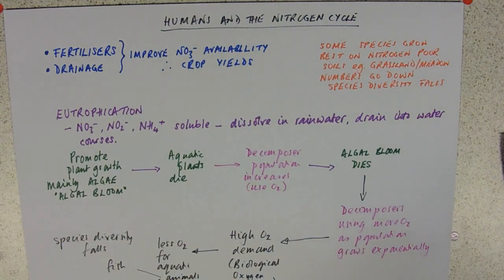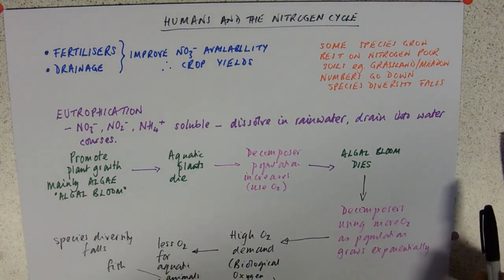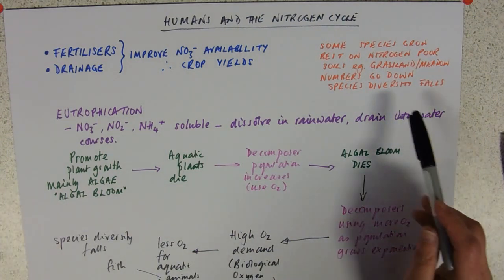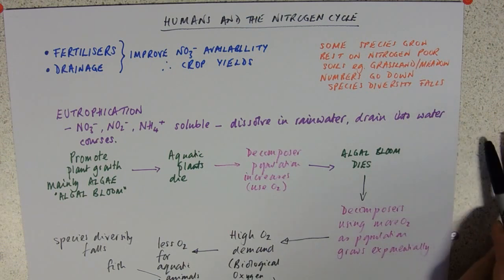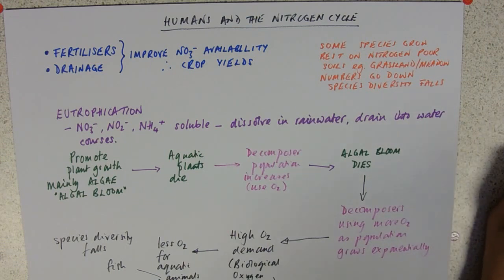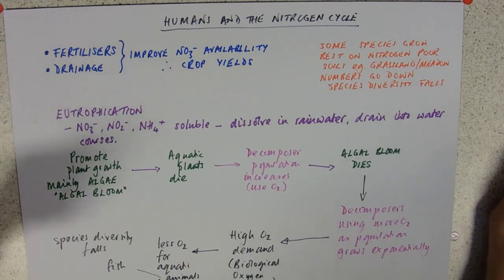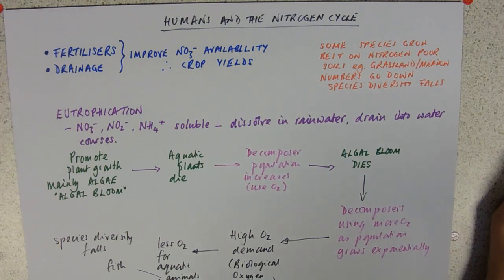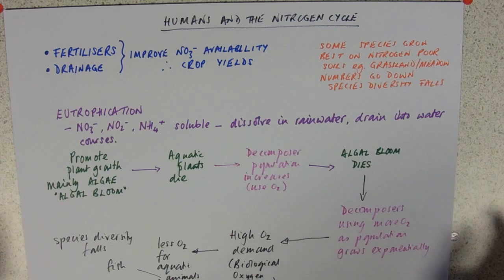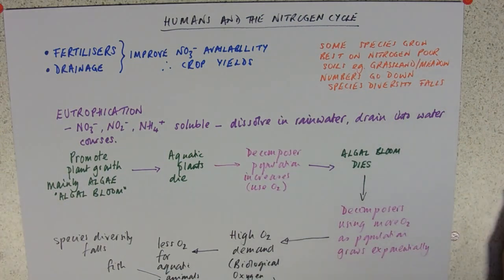So fertilizers and drainage are great for the nitrogen cycle and crop yields, but you have to remember the downsides: species being outcompeted because they don't tolerate high nitrogen content, or outcompeted because land has been drained, destroying aquatic habitats like blanket bogs, and then the eutrophication issue. All of these cause a loss in species diversity, which is a bad thing.